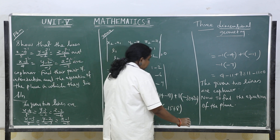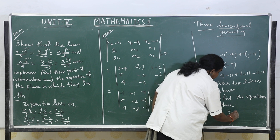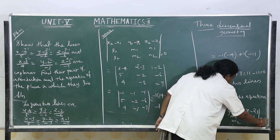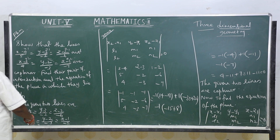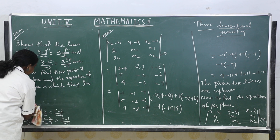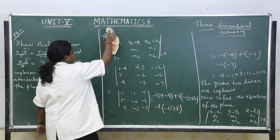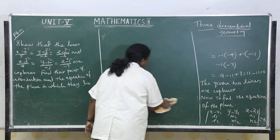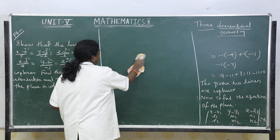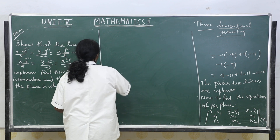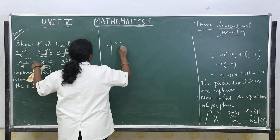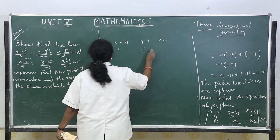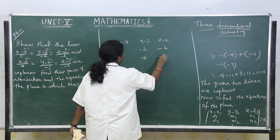The equation of the plane containing these two lines is the determinant with first row (x−x1, y−y1, z−z1), second row (l1, m1, n1), third row (l2, m2, n2) equal to 0. Taking x1=4, the determinant is: first row (x−4, y−3, z−2), second row (5, −2, −6), third row (4, −3, −7) equal to 0.